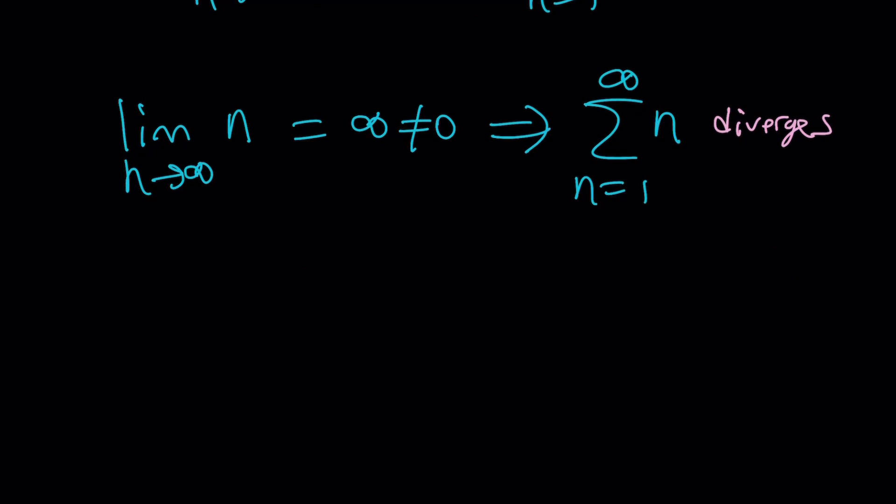So, the conclusion is 1 plus 2 plus 3 dot dot dot all the way to infinity does not equal negative 1 over 12.